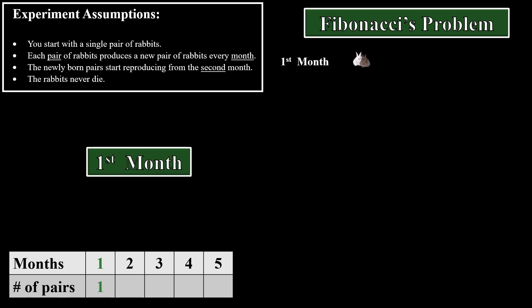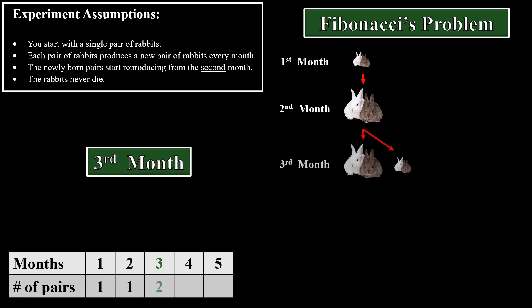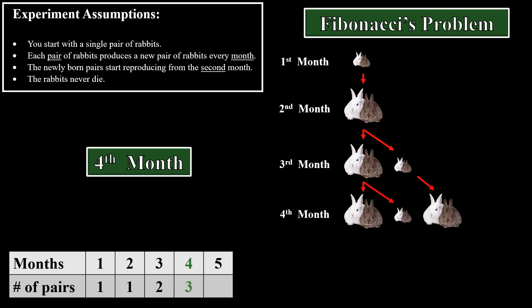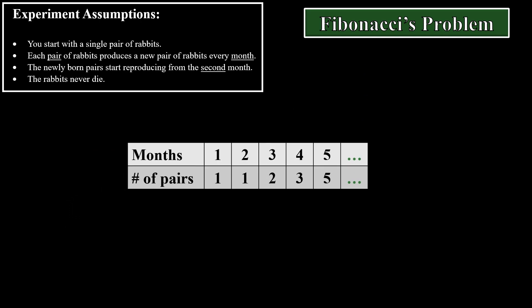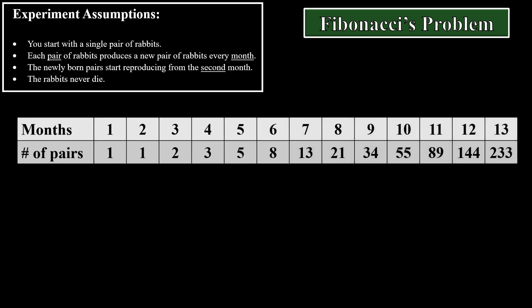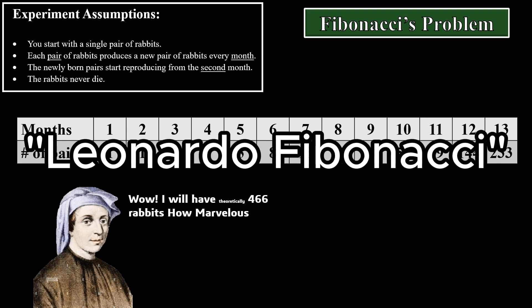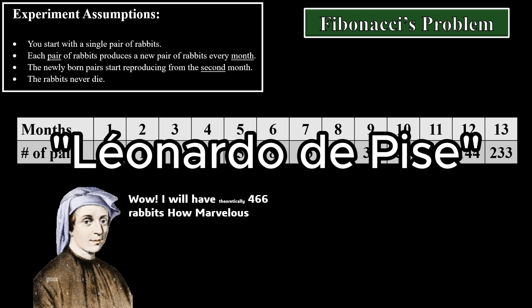Let's actually simulate this experience. We start with a baby pair of rabbits — still not able to reproduce — so the total number of pairs is equal to one. One month after, this baby pair grows, being able to reproduce, and the total number of pairs is still one. Then in the second month, this pair will reproduce, giving birth to a newly born pair, while the parents remain. Continuing this, after five months we will have five pairs. If you continue the experience yourself, you will see that after one year — at the 13th month — you will have 233 pairs, which is 466 rabbits. This dude was called Leonardo Fibonacci, also known as Leonardo the Pisan. Problem solved.